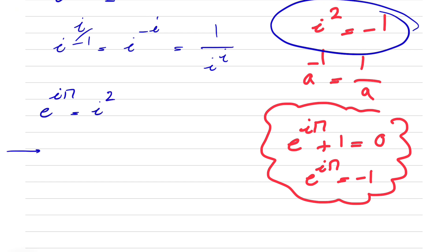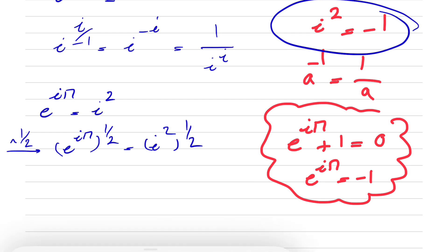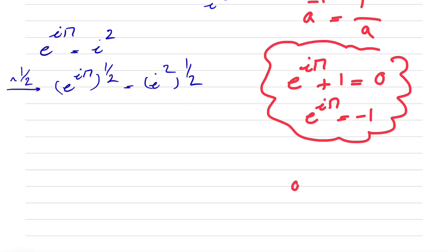And here we're going to do the power of 1 half on each side. So basically we have e to the power of i pi, all to the power of 1 half, is equal to i squared all to the power of 1 half. We know when we have a to the power of m to the power of n, this will be a to the power of m times n, so basically we can multiply each of these exponents.